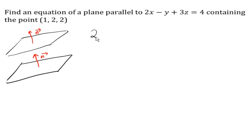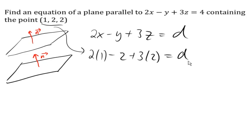it's also going to have an equation of this form. And now we just need to figure out what that constant d is. So now we can plug in our point (1, 2, 2) for x, y, and z, solve for that constant. And so the plane that we're looking for is 2x minus y plus 3z equals 6.